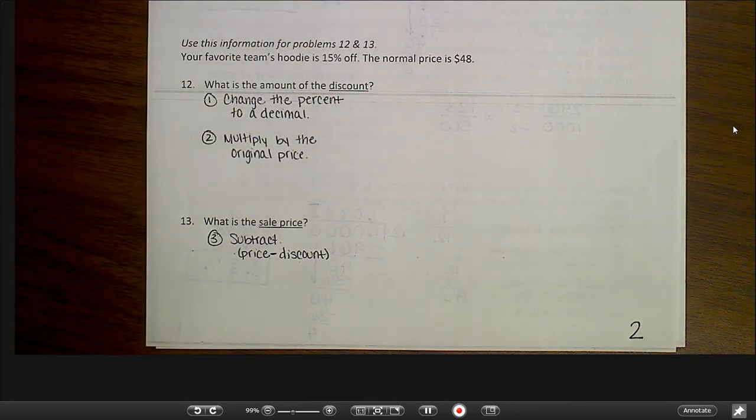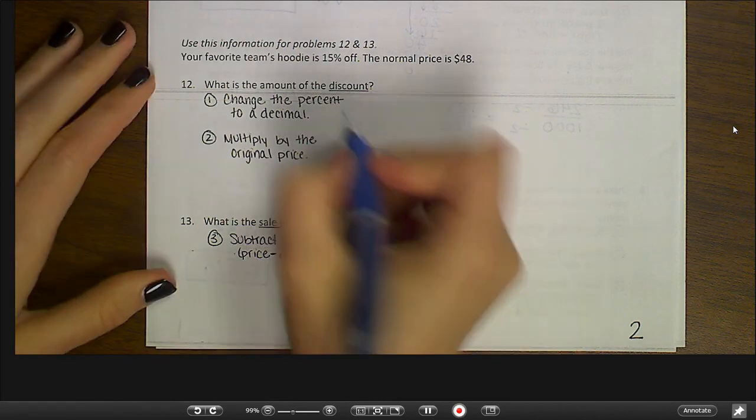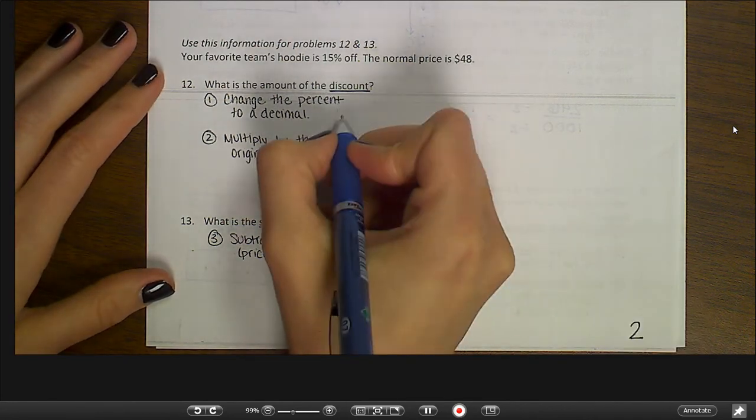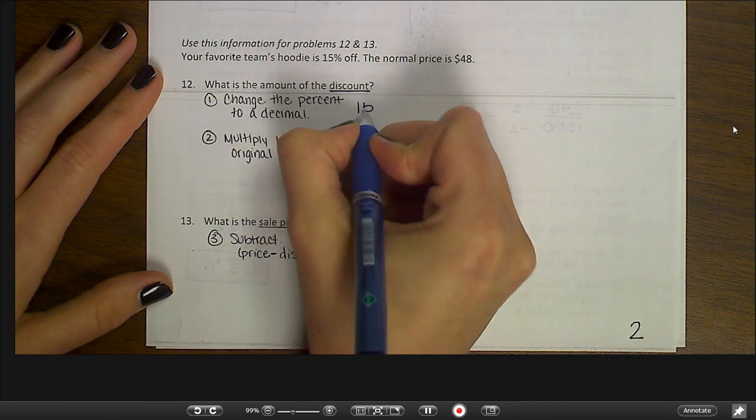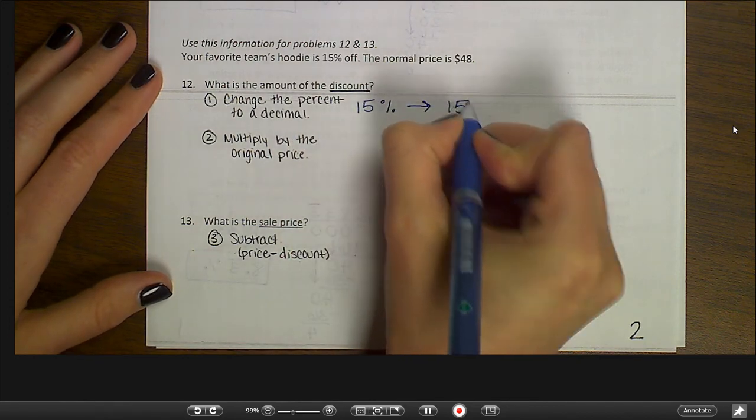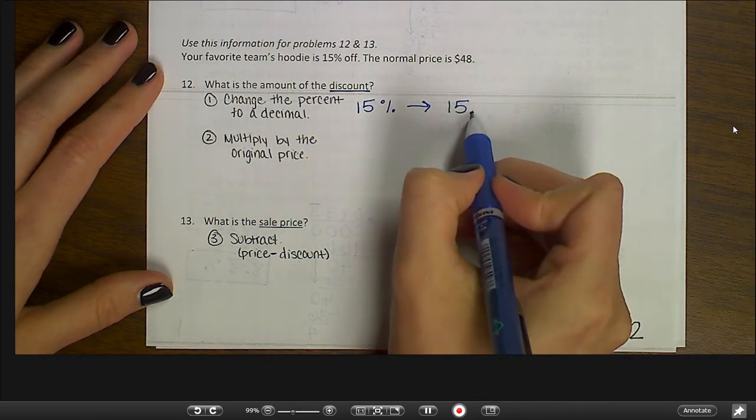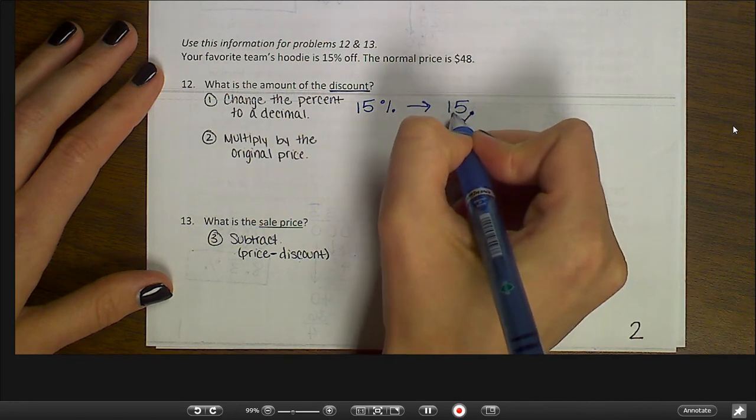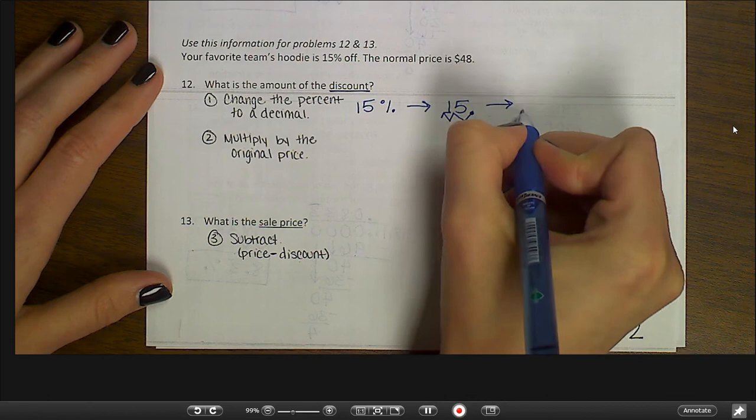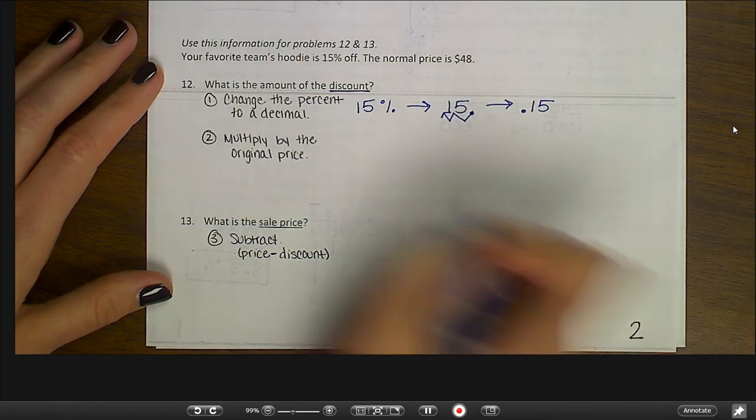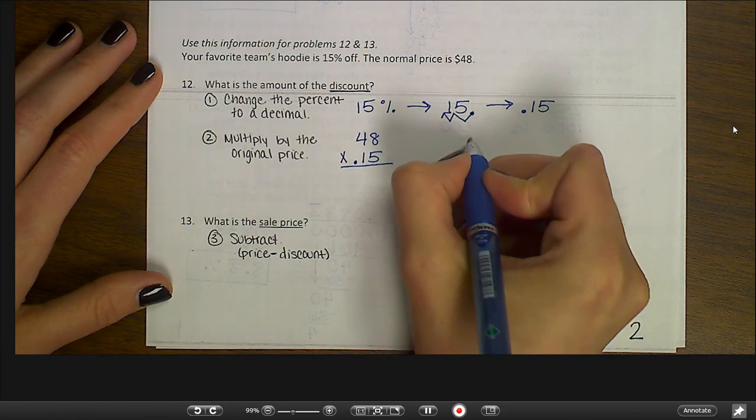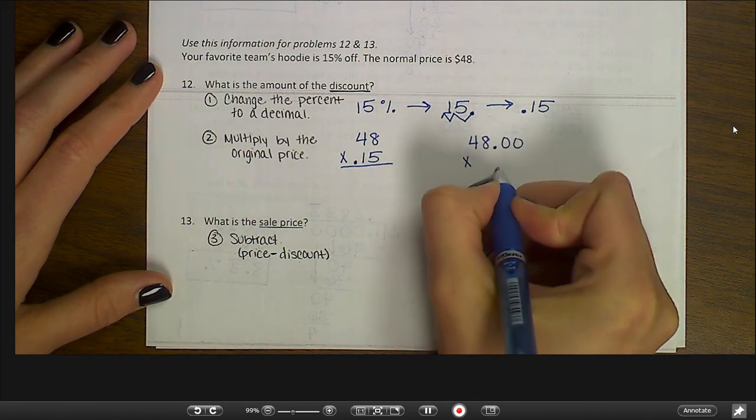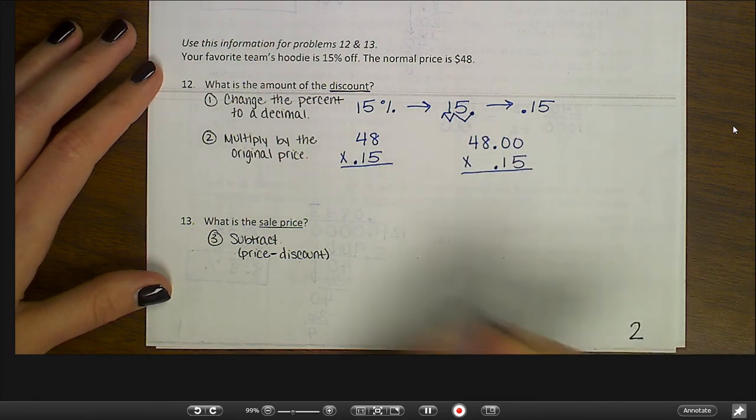For number 12 and 13, we need to know that your favorite team's hoodie is 15% off. And the normal price is $48. So first we want to know the amount of the discount. We need to change the percent to a decimal. These are the same steps that we've always gone through. Same three steps. So 15%. I'm going to drop the percent sign. The decimal point is always at the end. And to change from a percent to a decimal, I move two places to the left. So this becomes 15 hundredths. Then I'm going to multiply by the original price. That's $48 times 15 hundredths. Now some people would rather actually write out $48 times 15 hundredths. You're going to get the same answer either way. But we're going to go ahead and do it the shorter way this time.